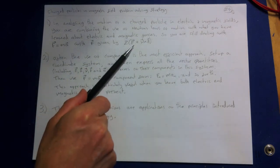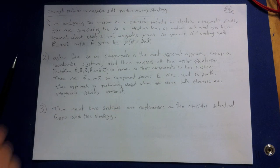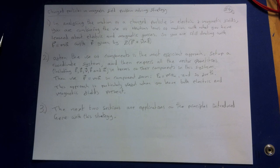This general equation for the particle includes the electric and magnetic fields too. Often the use of components is the most efficient approach. Set up a coordinate system and then express all the vector quantities including vector E, vector B,